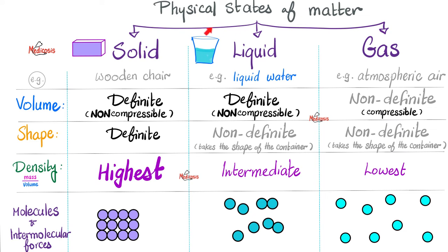Physical states of matter: we have solid, liquid, and gas. Example of solid — a piece of wood. Liquid — liquid water. Gas — the atmospheric air. Solids have definite volume: a piece of wood cannot be compressed, it has definite volume. It also has definite shape. If you look at the molecules of solids, they are very close together, tightly bound, with the highest density — the highest mass per a given volume. Very dense structure.